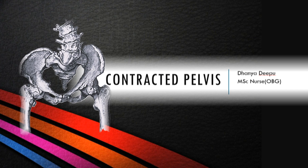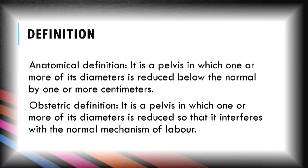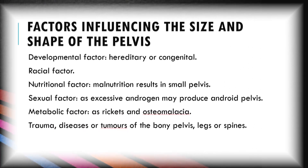When we discuss contracted pelvis, it needs to be discussed in two ways: anatomically and obstetrically. The anatomical definition: it is a pelvis in which one or more of its diameters is reduced below normal by one or more centimeters. The obstetrical definition: it is a pelvis in which one or more diameters is reduced so that it interferes with the normal mechanism of labor.